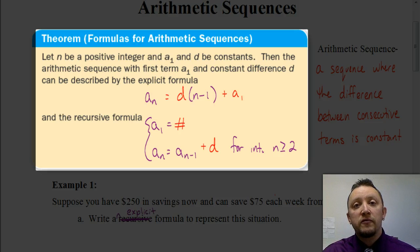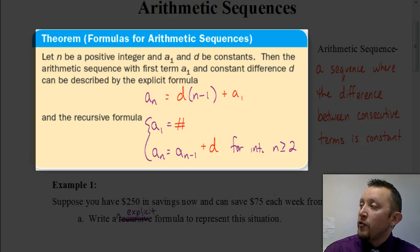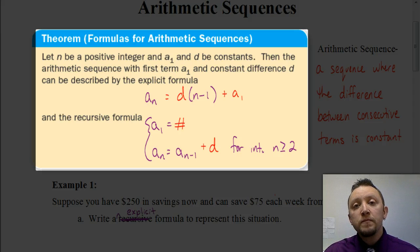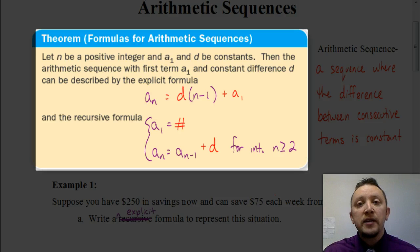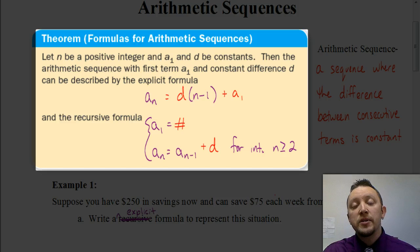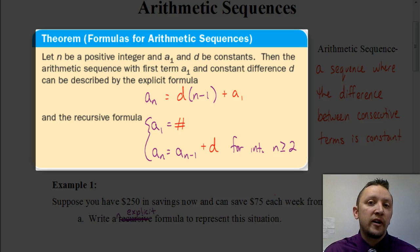For the explicit formula, the pieces in red are going to be replaced by numbers, and the pieces in purple are always going to remain as part of your specific formula. The same is true with the recursive formula. The values for d and a-sub-1: a-sub-1 refers to our first term in the sequence, and d refers to our constant difference. Sometimes they'll give us those two pieces straightforwardly, but other times we'll have to do more work to figure out what the first term and constant difference are.